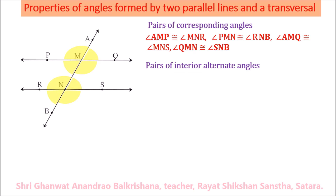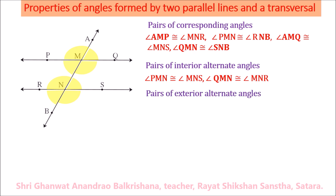The pairs of alternate interior angles which are congruent are: angle PMN and angle MNS, and angle QMN and angle MNR. The exterior angle pairs: angle AMP is congruent with angle SNB, and angle AMQ is congruent with angle RNB.